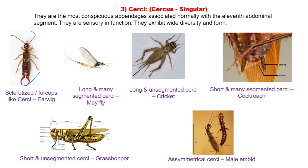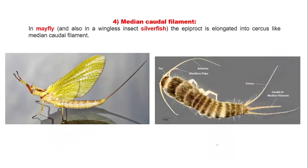Cerci are the most conspicuous appendages associated normally with the 11th abdominal segment of insects. They are generally sensory in function and exhibit wide diversity in form. Sclerotized, forcep-like cerci are found in earwigs; long and many-segmented cerci are found in mayfly; long and unsegmented cerci are found in Tricoptera; short and many-segmented cerci are found in cockroach; short and unsegmented cerci are found in grasshopper; and asymmetrical cerci are found in male earwigs.